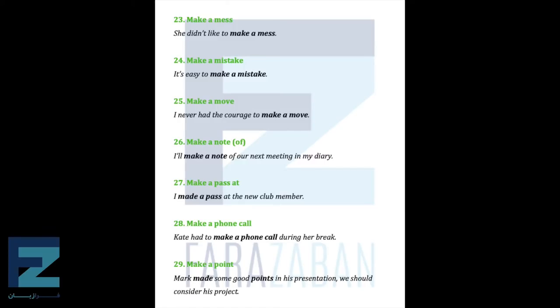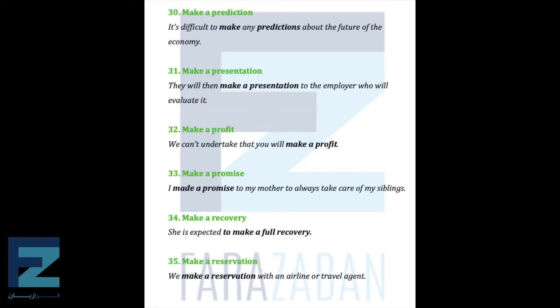Make a mistake — It's easy to make a mistake. Make a move — I never had the courage to make a move. Make a note — I'll make a note of our next meeting in my diary. Make a pass at — I made a pass at the new club member. Make a phone call — Kate had to make a phone call during her break. Make a point — Mark made some good points in his presentation; we should consider his project. Make a prediction — It's difficult to make any predictions about the future of the economy.